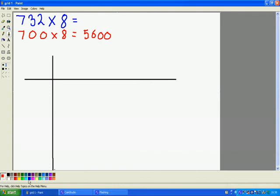Right, the next thing I do is I'm going to partition 732 onto my grid. So 732, that's going to be multiplied by 8.